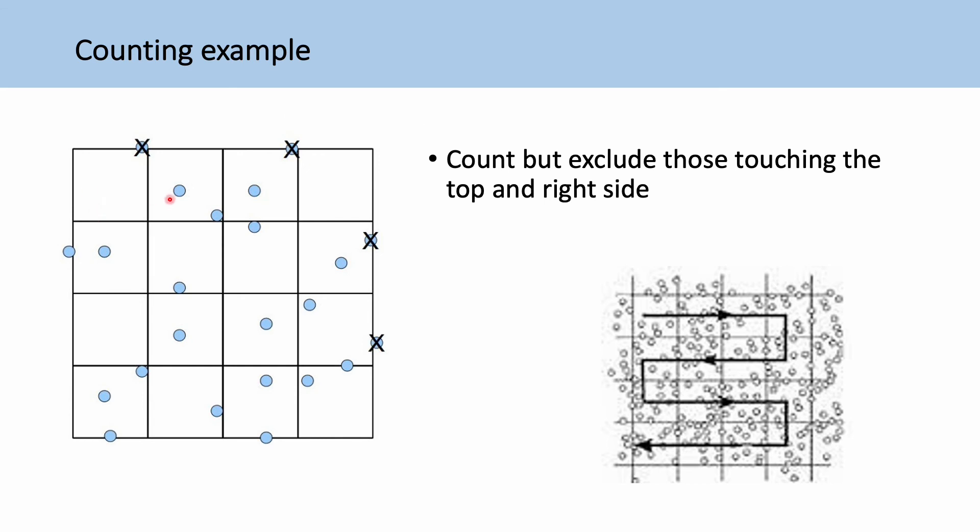So for example, if we were doing this here, we'd count 1, 2, 3, 4, 5, 6, 7, 8, 9, 10, 11, 12, 13, 14, 15, 16, 17, 18, 19 cells.